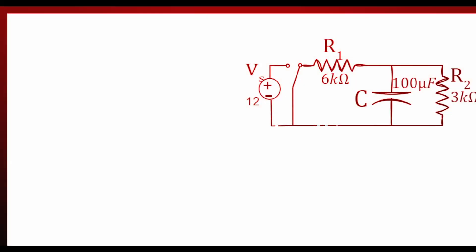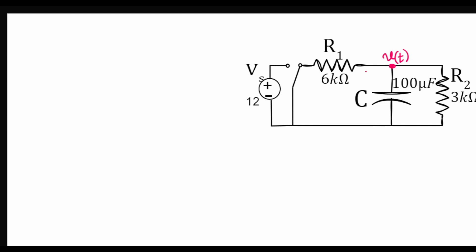Now let's see what happens when the switch is moved to position 2. We have a new circuit; let's call the voltage across the capacitor V(t). Applying KCL at this node, the currents leaving the node are: I1 through resistor R1, Ic through the capacitor, and I2 through resistor R2. KCL gives us: I1 + I2 + Ic = 0.